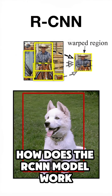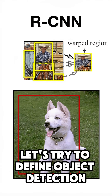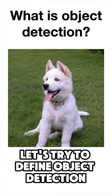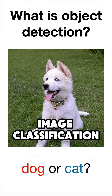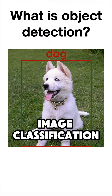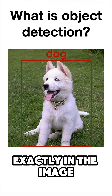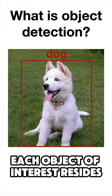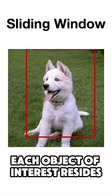How does the RCNN model work? First of all, let's try to define object detection, which, compared to image classification, tries to identify where exactly in the image each object of interest resides.